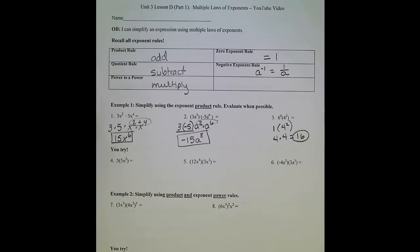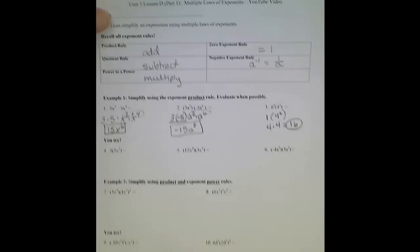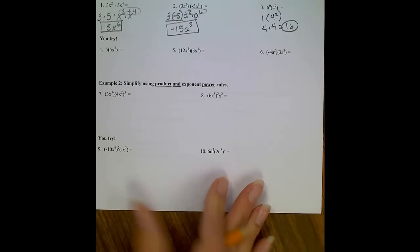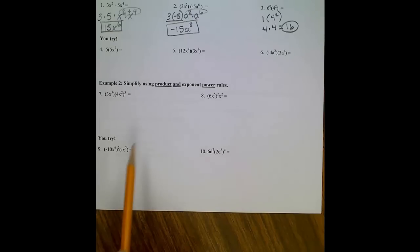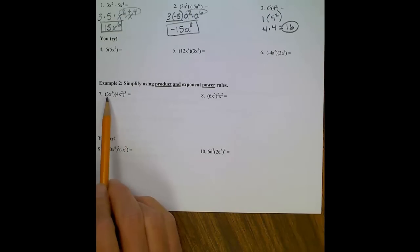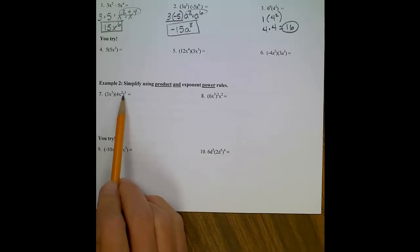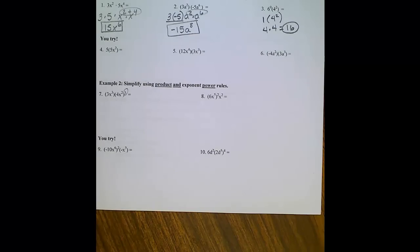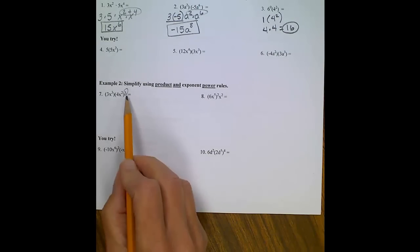Skip those u-tries and head down to example number 2, number 7. Now these problems are a little bit different. Sure, we still have two terms we're multiplying together, but one of these terms has an extra exponent attached to it. Order of operations, as you'll remember, tells you you must take care of your exponents before you do multiplication.